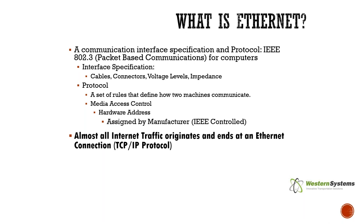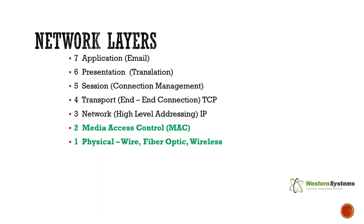Every Ethernet device in the world has a unique hardware address assigned by the manufacturer, called the Media Access Control address, or MAC address. Almost all internet traffic originates and ends at Ethernet connection points governed by the TCP/IP protocol. The study of network layers is beyond this course, but it is necessary to mention because we'll talk about layer one and layer two Ethernet switches, and touch briefly on layer three.